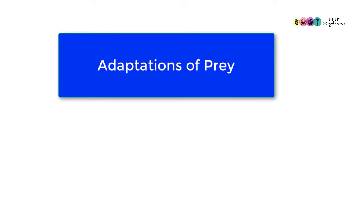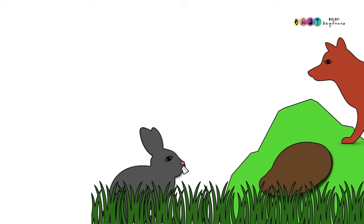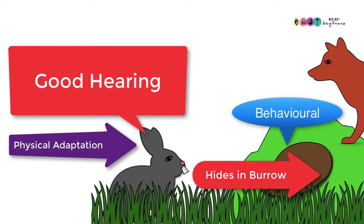What about the adaptations of prey? How do prey avoid being captured and killed? Well, some prey have great adaptations, both behavioural and physical. So the rabbit here has excellent hearing, that's a physical adaptation and he will know very quickly if there's a fox, a predator around and take evasive action. The action he takes is behavioural, he'll hide away in his burrow.